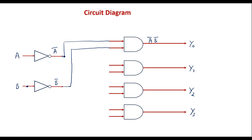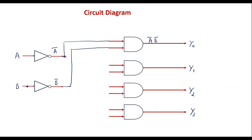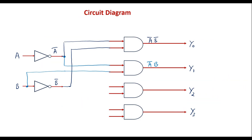Now let me draw the Y1 output. Y1 equals A-bar B. We have A-bar from the first inverter; connect A-bar to one input of the second AND gate. The other input is B taken directly, so connect B to this AND gate. The output is A-bar B. For Y2, which equals A B-bar: take A as a direct input and connect B-bar from the second inverter to this AND gate.